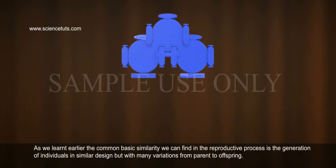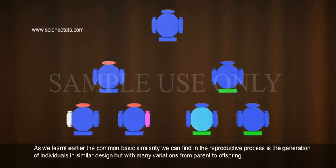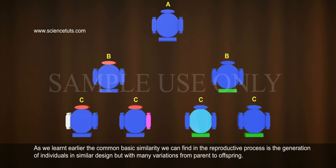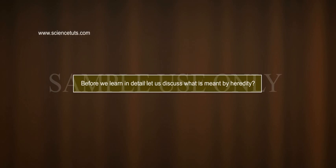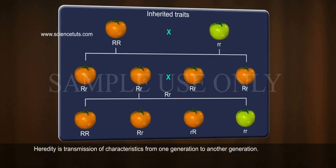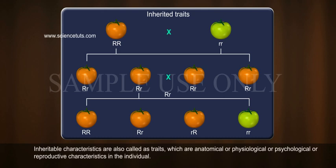Heredity. As we learnt earlier, the common basic similarity we can find in the reproductive process is the generation of individuals in similar design but with many variations from parent to offspring. Heredity is the transmission of characteristics from one generation to another. Inheritable characteristics are also called traits, which are anatomical, physiological, psychological, or reproductive characteristics in the individual.